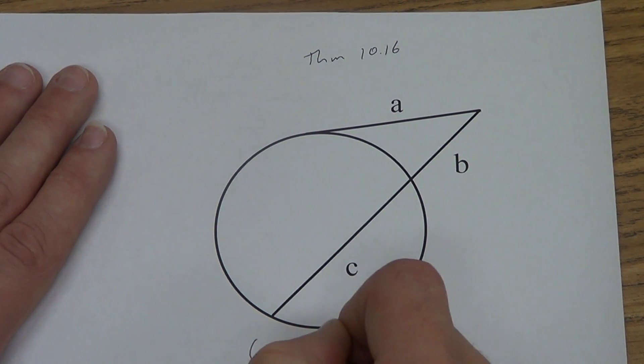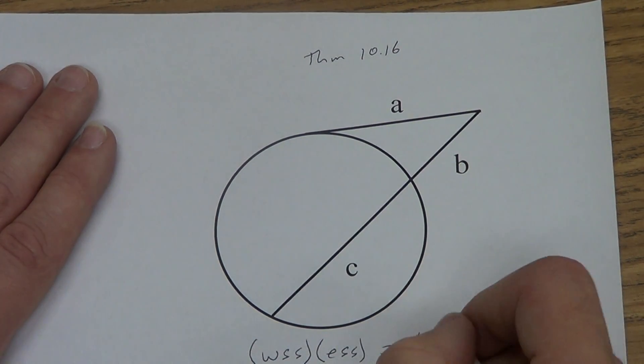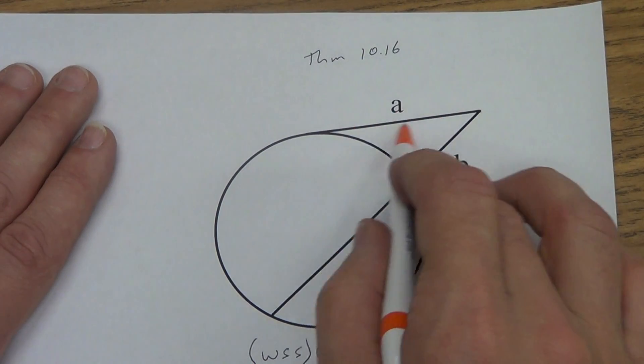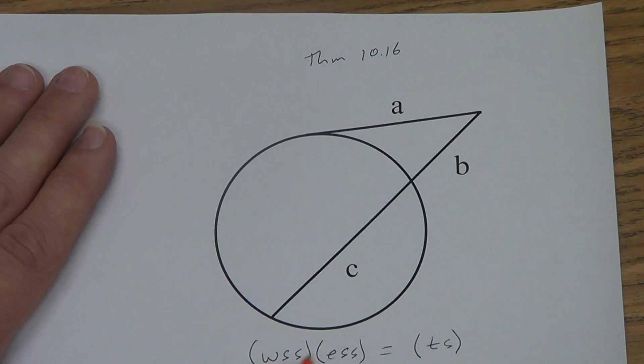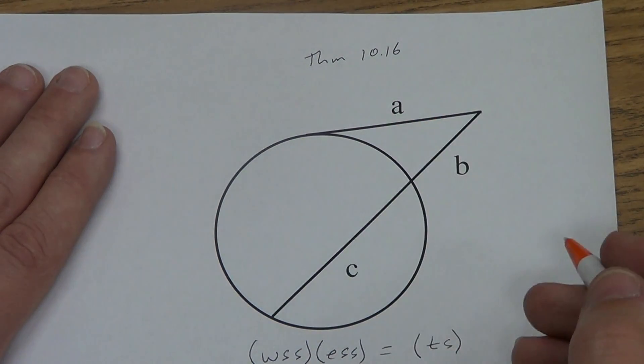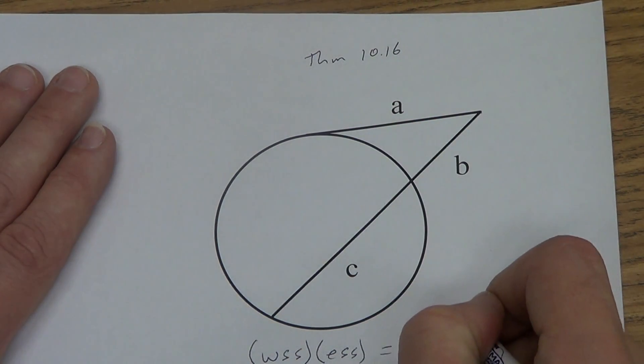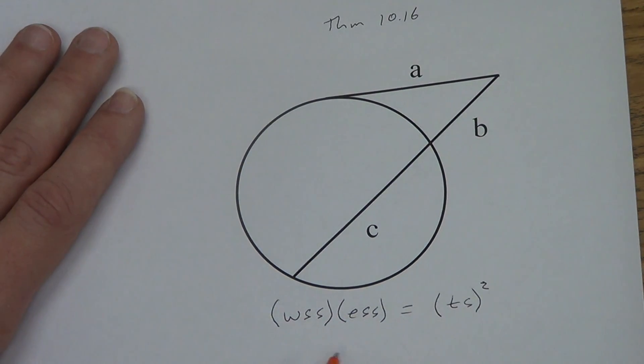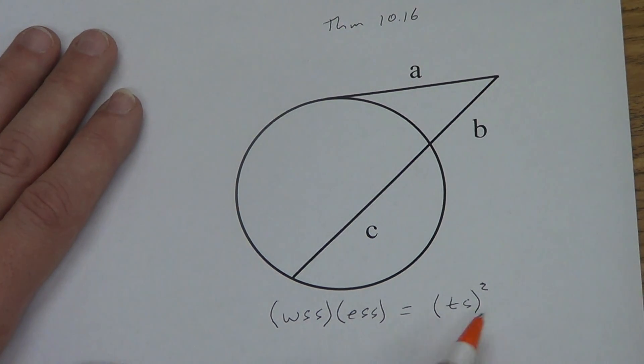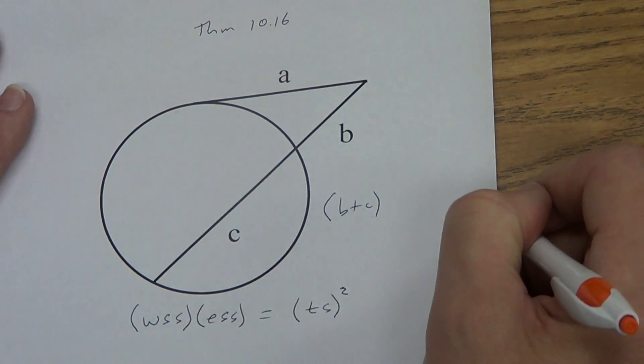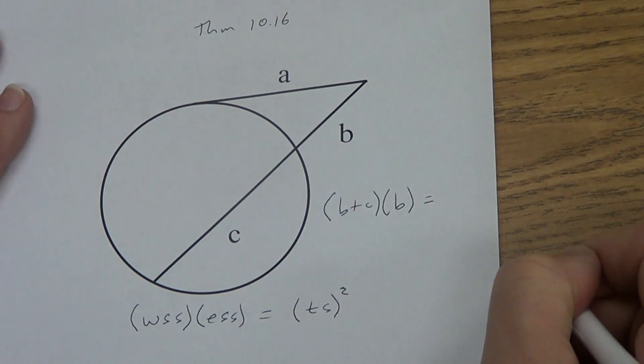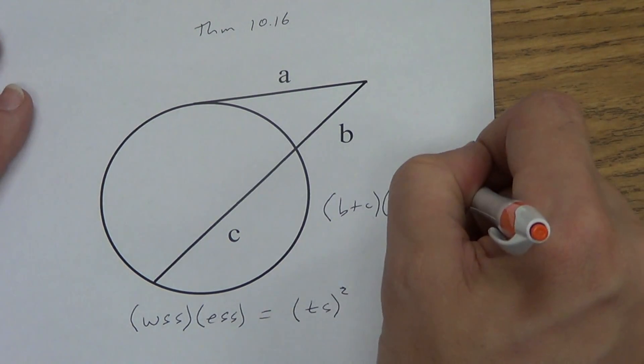wss times ess equals, well this isn't a wss or an ess, it's a tangent segment, so we're just going to write ts. But I have to multiply it by something here. I multiplied, so here I have to multiply. Well I have to multiply it by what? The only thing here to multiply it by is itself. So ts times ts, or easier, ts squared. So once again, whole secant segment, external secant segment, tangent segment. So how does that look if we write it down with the whole thing? We'd have to add again, so b plus c times the external part b equals the tangent segment squared.